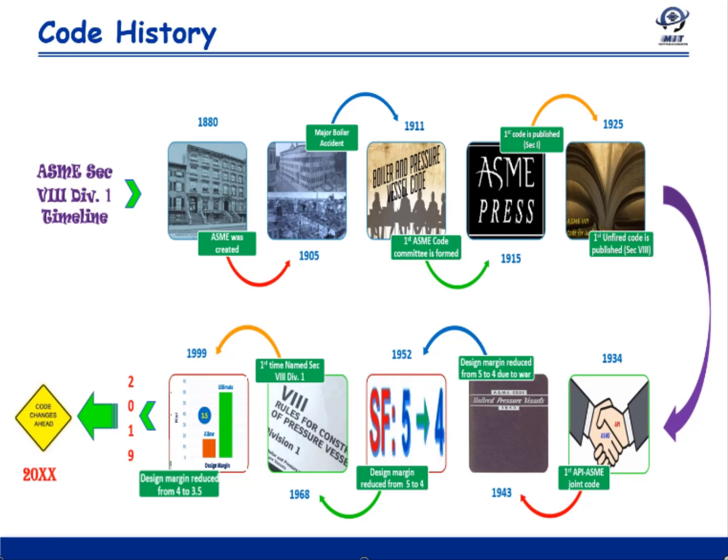During the Second World War, the need to conserve material led ASME to revise the safety factor from the original 5 to 4. This was considered a temporary change only for the duration of the war, after which it was expected to revert to 5. But after the war, the safety factor was finally revised permanently from 5 to 4 after due consideration.